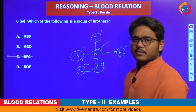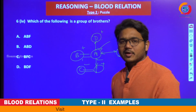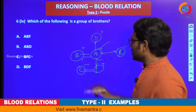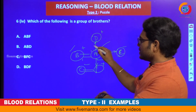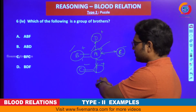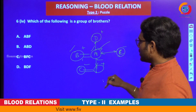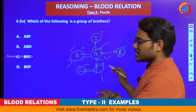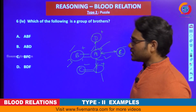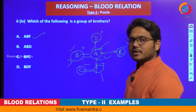Which of the following is a group of brothers? According to the problem statement, there are three brothers. We identified them while drawing the tree. Who are the brothers? A and B are two brothers, and F is also one brother — A, B, and F are the three brothers. Although they are not all mutual brothers, these three form the set of brothers. Option A — A, B, and F — is correct.